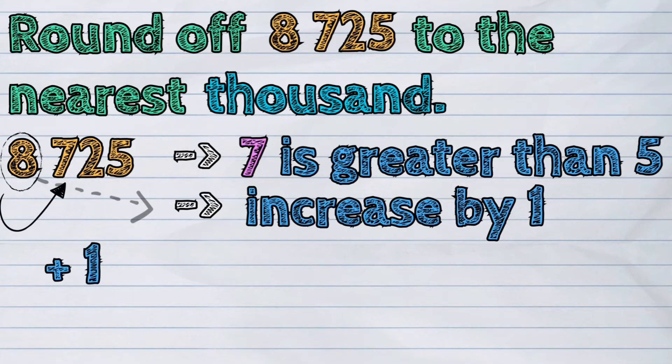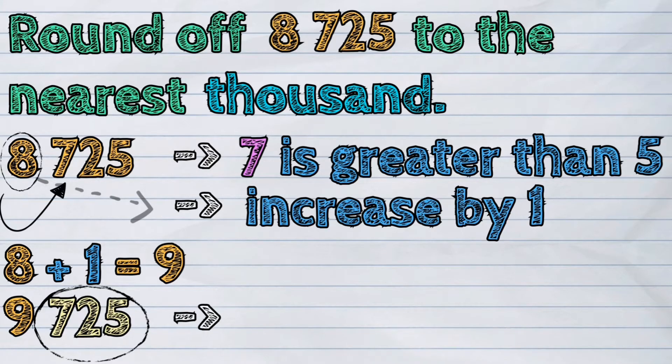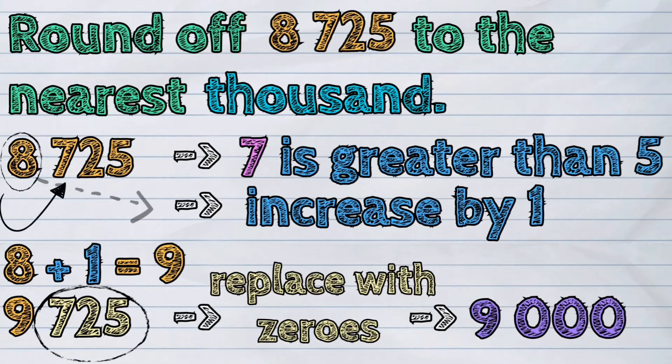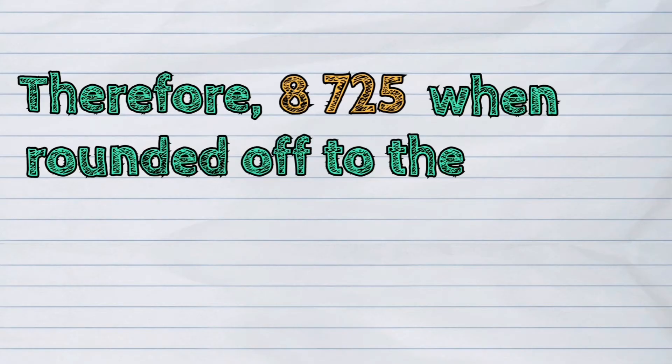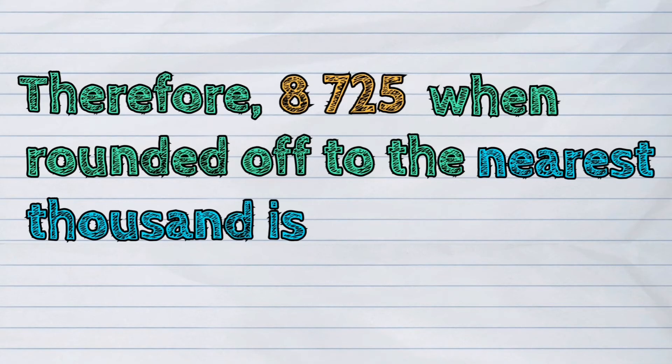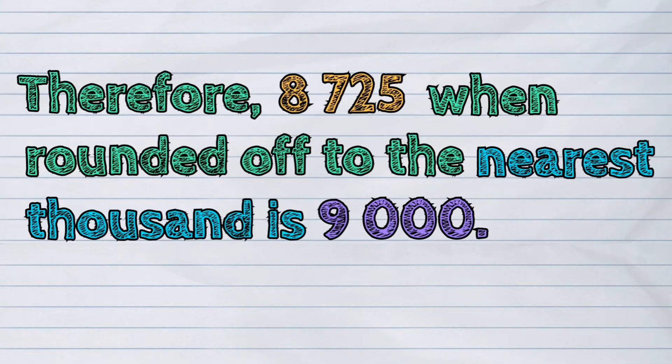The encircled digit is 8, and now it will become 9. Then we will replace all the digits to its right with zeros. Therefore, 8,725 when rounded off to the nearest thousand is 9,000.